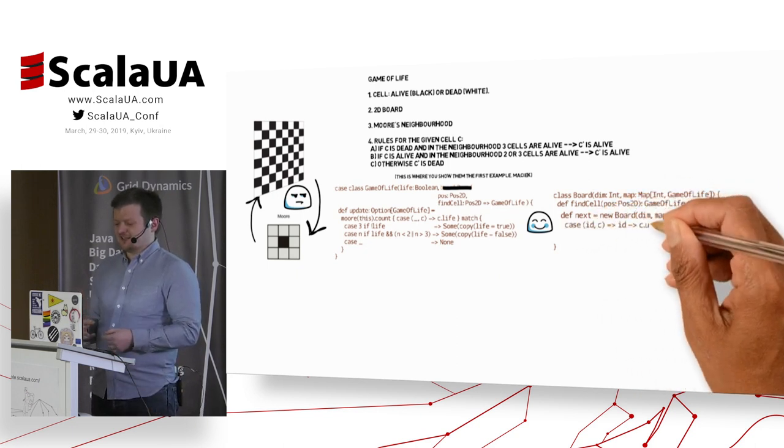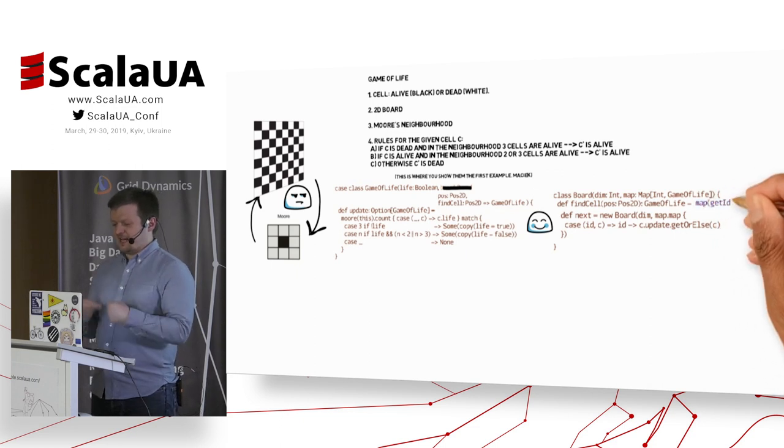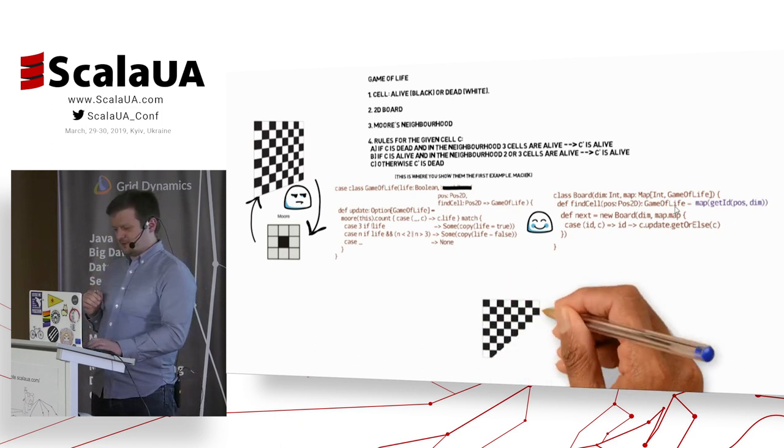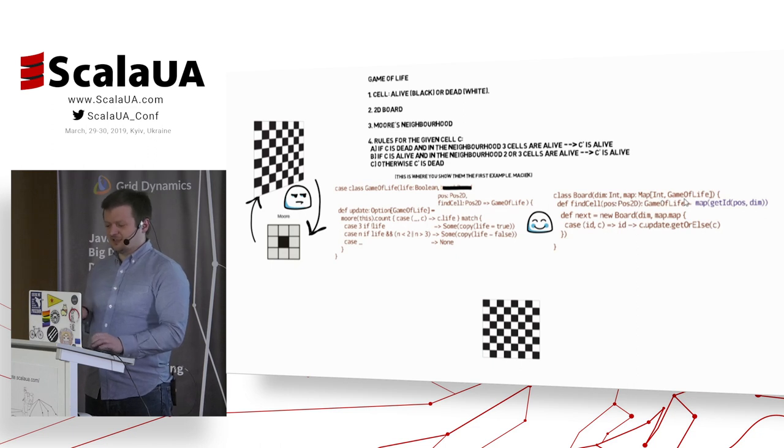And then on the board, we have a method next that creates a new version of the board by updating every cell of the board. There's one change here. We have the map on the board. It's not really a map of positions to the cells. It's a map of some kind of identifiers to the cells. That's because the positions are not always one-to-one.